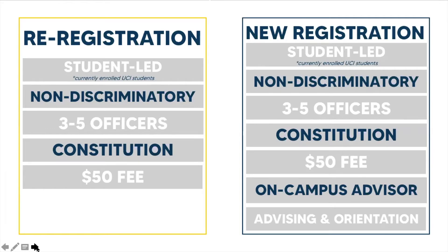According to Registered Campus Organization Policy 70.10, the organization must be non-discriminatory. This means the organization cannot discriminate on the basis of gender, race, sexual orientation, religious beliefs, etc. Exceptions to this policy are given to Greek organizations. Every organization must have a minimum of three signers and a maximum of five, and each signer must be a currently enrolled UCI student. Your organization must have a constitution on record — a sample can be found on the campus organization's website under the resources tab. Each year the organization must pay a one-time registration fee of $50.